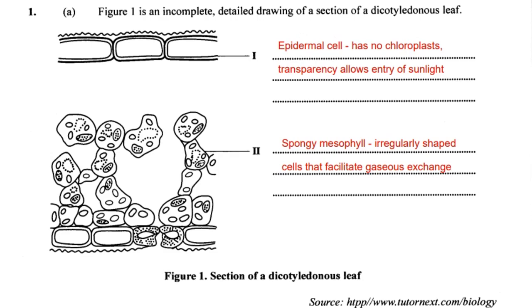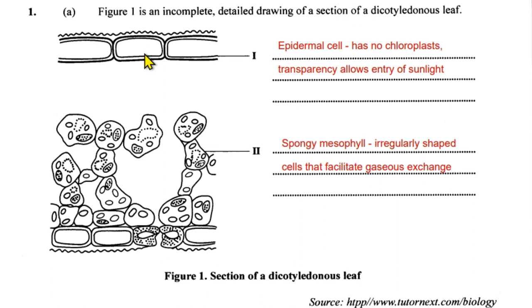Question 1A. Figure 1 is an incomplete detailed drawing of a section of a dicot leaf. Here we have two parts labelled. We have the epidermal cell, which is the top layer. The epidermal cell is at the top — this is the upper epidermis — and above this is the waxy cuticle to limit the loss of water. The epidermal cell is different from some other cells in the leaf as it does not have chloroplasts.